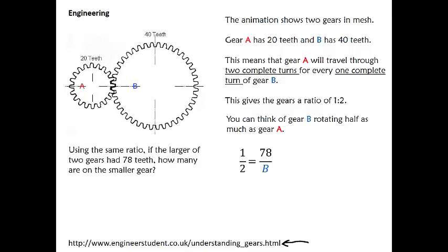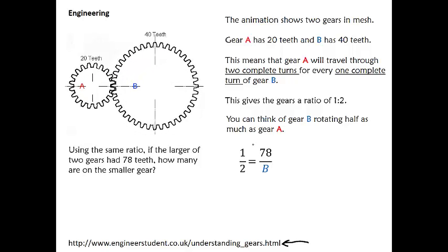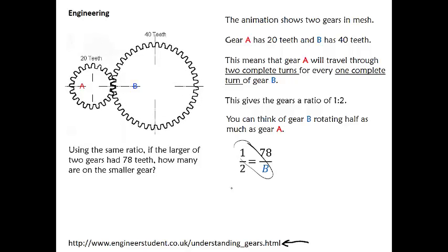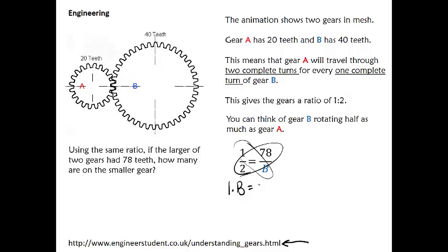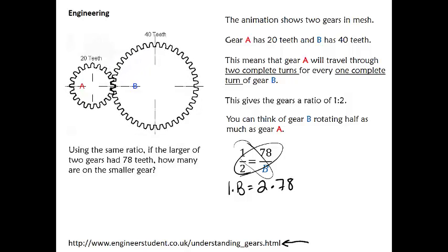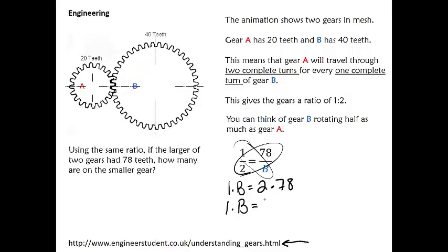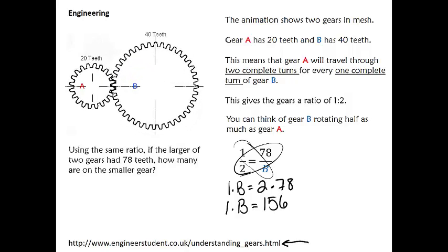So what are we going to do? Yeah, we're going to cross multiply. So we have 1 times B equals 2 times 78. So we'll have 1 times B equals 156. 1 times B is the same thing as just B.